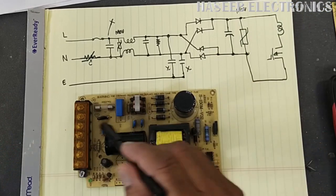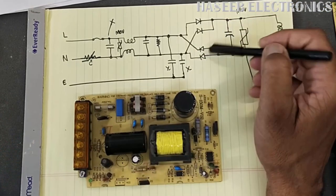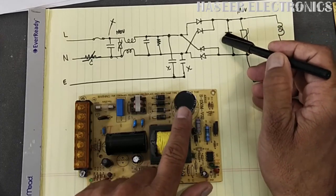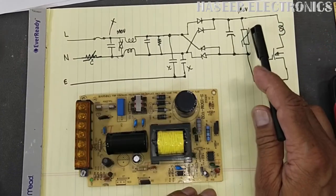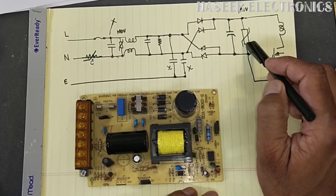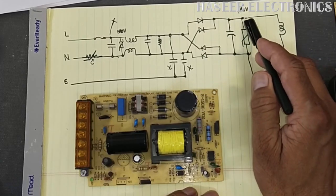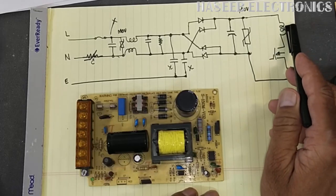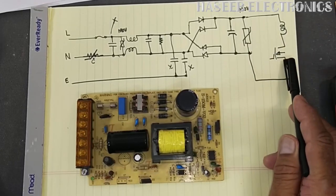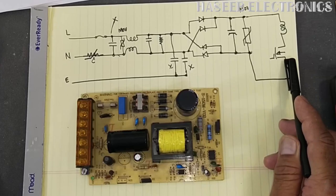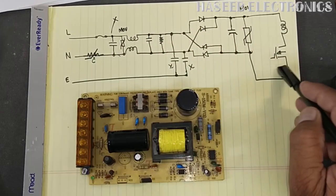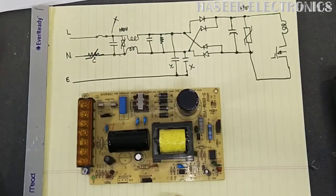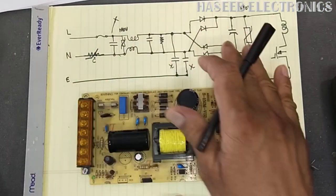Then we have a bridge rectifier, and after that we have the bulk capacitor or smoothing capacitor. Sometimes for protection of this capacitor there is a voltage arrestor MOV as well. Then we have the winding and MOSFET. This is the total circuit involved in the short circuit — any one component in this area can cause the fuse to burn.